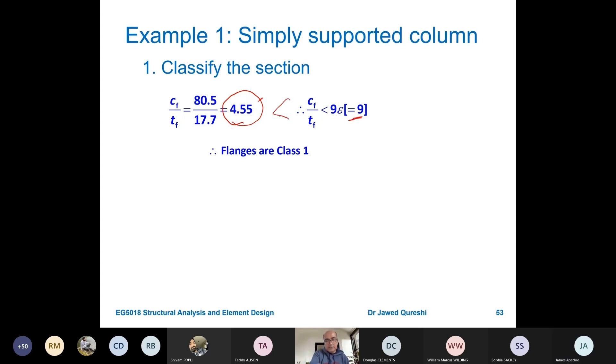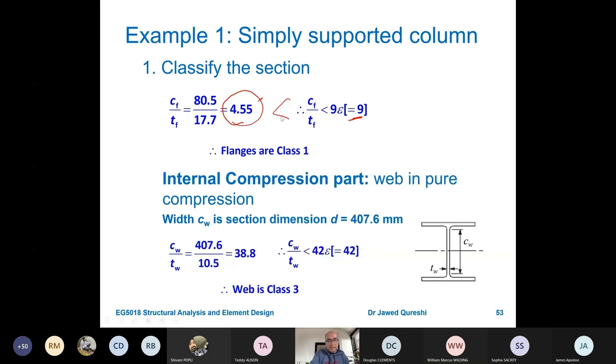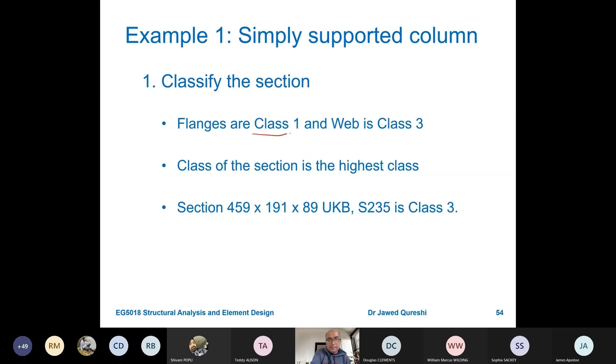This is certainly less than nine times one, so flanges are class one. Again for web the limit is less than 42 epsilon, so web is class three. As I said to you, most of the sections are class one or two in the section table. But here we are using a UKB, a beam section as a column, which is not a common thing in industry. We normally use UKC as columns where breadth and height are the same. Flanges are class one. Web is class three. So we have to choose the highest class. So highest class is class three. Section is classified as class three.